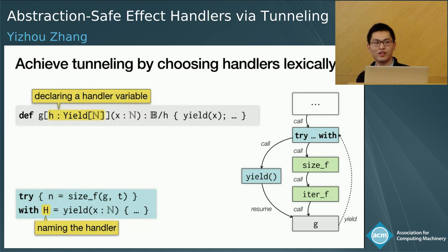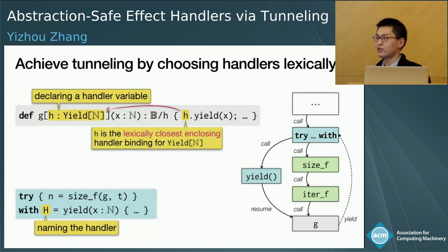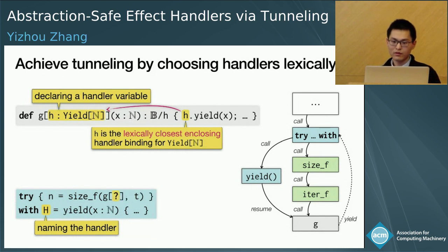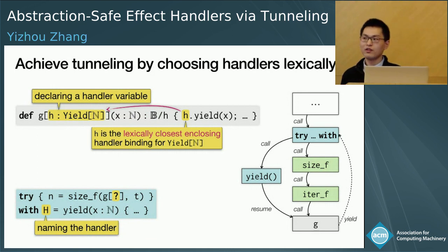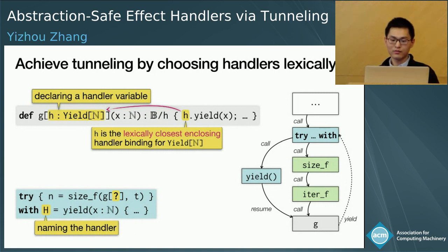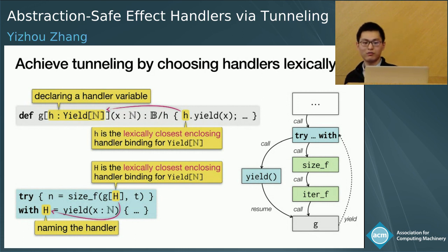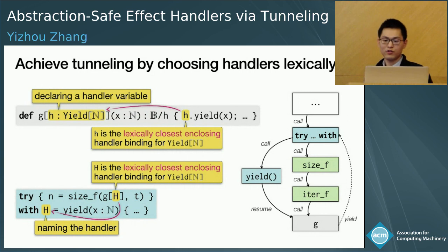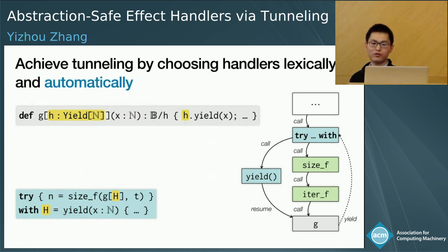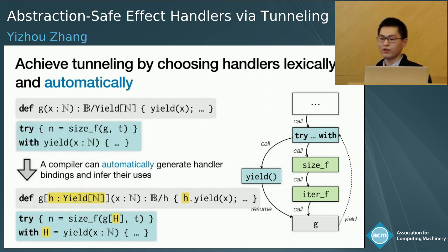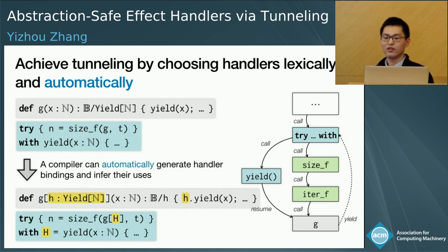With named handlers, picking the right handler for an effect operation is straightforward. In G, invoking the effect operation requires a handler to be provided; this handler is resolved to the lexically closest enclosing binding for yield — the handler variable we declared. Correspondingly, because G is parameterized by a handler variable, the reference to G in the client code needs to be supplied with the handler, which is again resolved to the lexically closest enclosing binding for yield. The runtime then knows that upon invocation of the effect operation in G, it should transfer control to the handler provided by the client code. This desugaring process is useful for the compiler, but the programmer need not use this verbose syntax — handler bindings can always be automatically generated and resolved to the lexically closest enclosing binding.